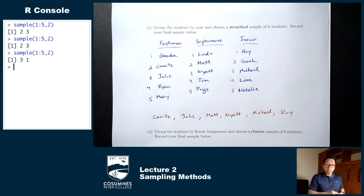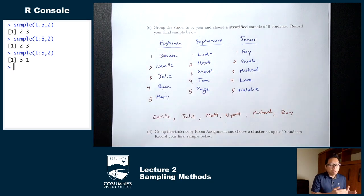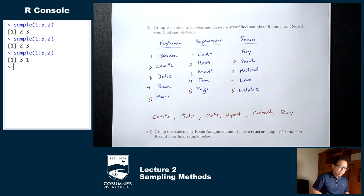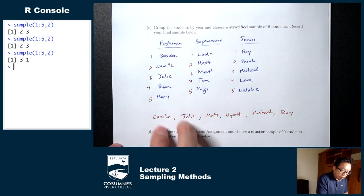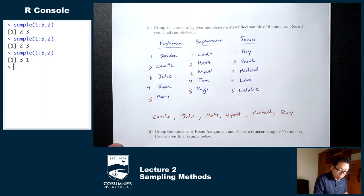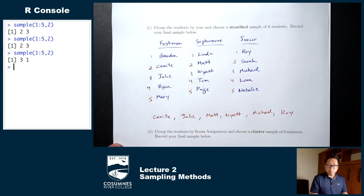A couple of things to notice. Within each group, we're really doing a simple random sample within each of those groups. But more importantly, notice that in a stratified sample I have representatives from each group: I have two freshmen, two sophomores, and two juniors — representatives from each group.